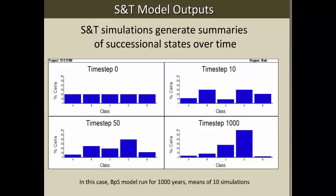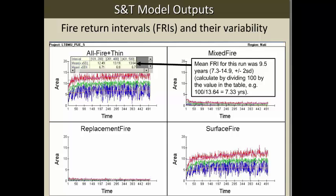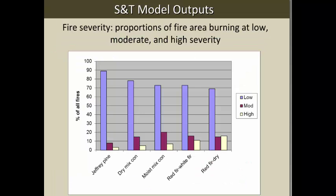Another very useful output is the fire return interval and variability therein. The values come out as fire frequencies, so you divide by 100 to get fire return intervals. This particular model had an average fire return interval of 9.5 years, with variability between 7.3 and 14.9 years — plus or minus a couple of standard deviations. You can also look at the post-fire landscape to get ideas about how much of the landscape burned at different fire severity levels. I've shown an elevational gradient from Jeffrey Pine through mixed conifer up into the red fir belt.